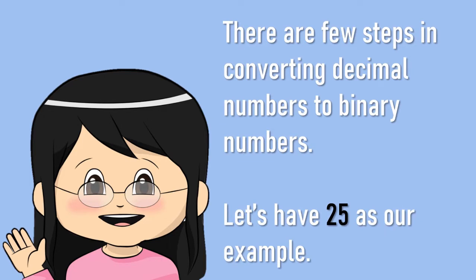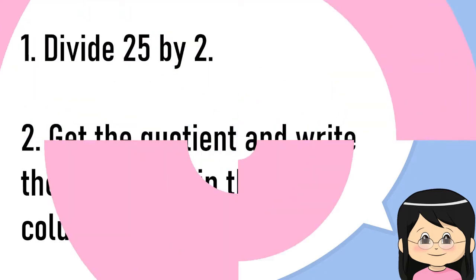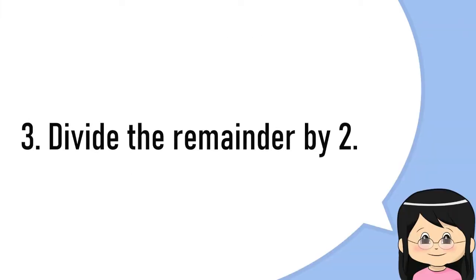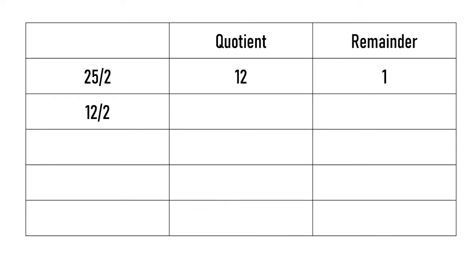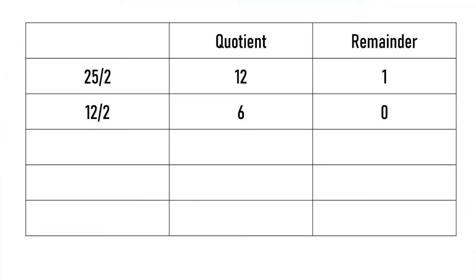There are a few steps in converting decimal numbers to binary numbers. Let's use 25 as our example. You may have your notebook or paper so we can solve this together. First, divide 25 by 2, then get the quotient and write the remainder in the last column. Again, divide the quotient by 2.